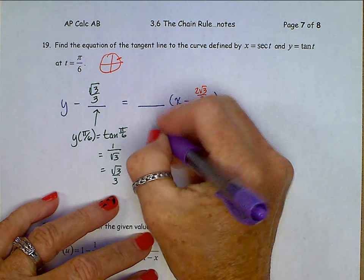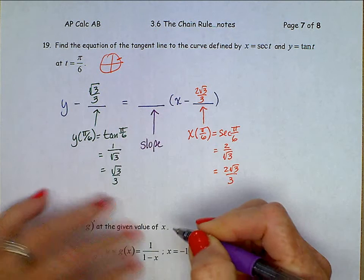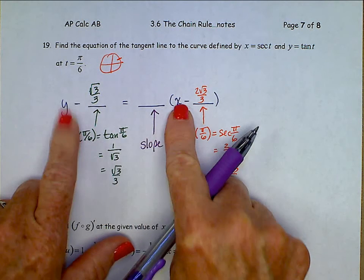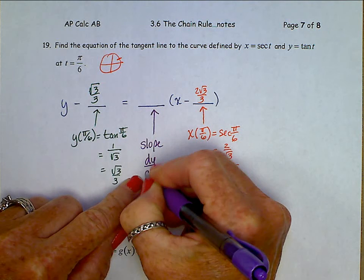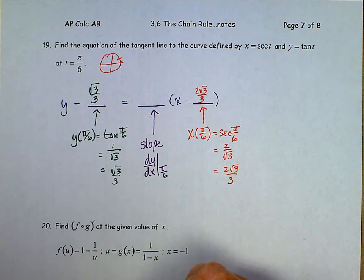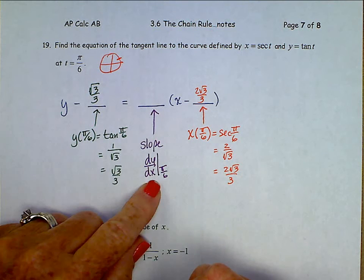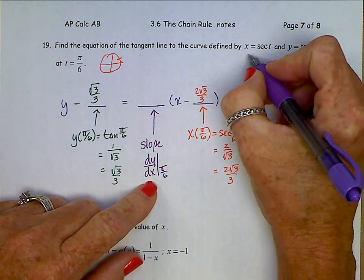Right here is slope. And since this is the equation of a line in terms of y's and x's, the slope we're looking for is dy dx at pi over 6. Well, we don't have an equation for y's and x's. So we're going to find these derivatives in terms of t.